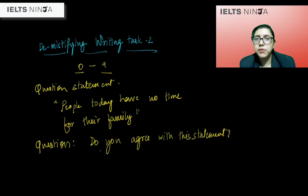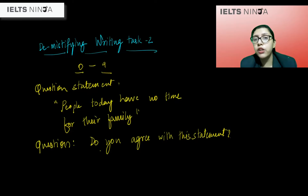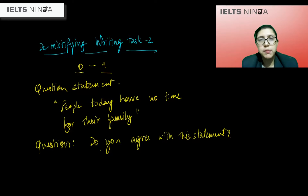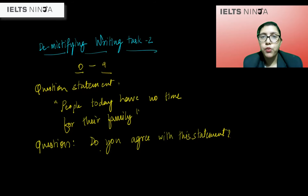Rather, try to find synonyms and write the same thing in a different or more refreshing way. This way you stand a better chance at getting a higher band. For example, instead of 'people today have no time for their family,' I would rephrase it as: 'in today's busy world, many consider spending time with their family as an almost frivolous waste of time.' How you phrase it depends on your opinion towards the statement.